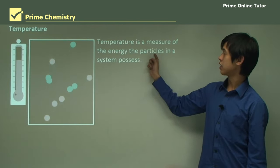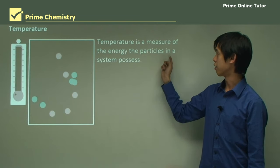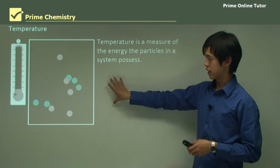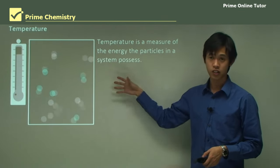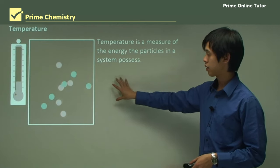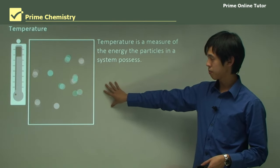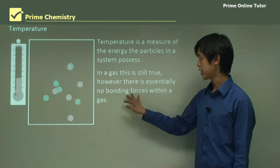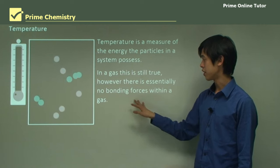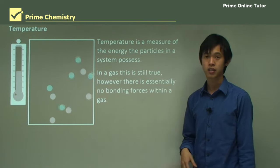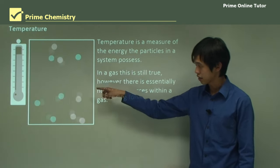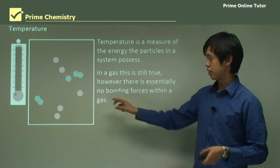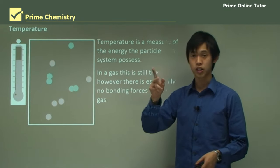Temperature is a measure of the energy of the particles in a system. When you have a set of particles like this, the temperature measures how much energy each of those particles has. As you can see, as the temperature goes up, the speed of the particles goes up as well. In a gas, there is essentially no bonding forces. Each of those particles you see here are all traveling independently.